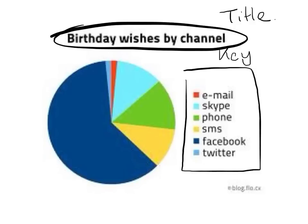You can see on this graph that red, which represents email, is here. Facebook, which is here, is in dark blue, and it's rather large. When interpreting these, all you need to do is use the key and the colours to figure out which is the most. You'll be asked questions like: which has the most birthday wishes? You can see Facebook is clearly the winner because it has the biggest part of the pie. Something like email, the red part, or Twitter, has a very small amount.